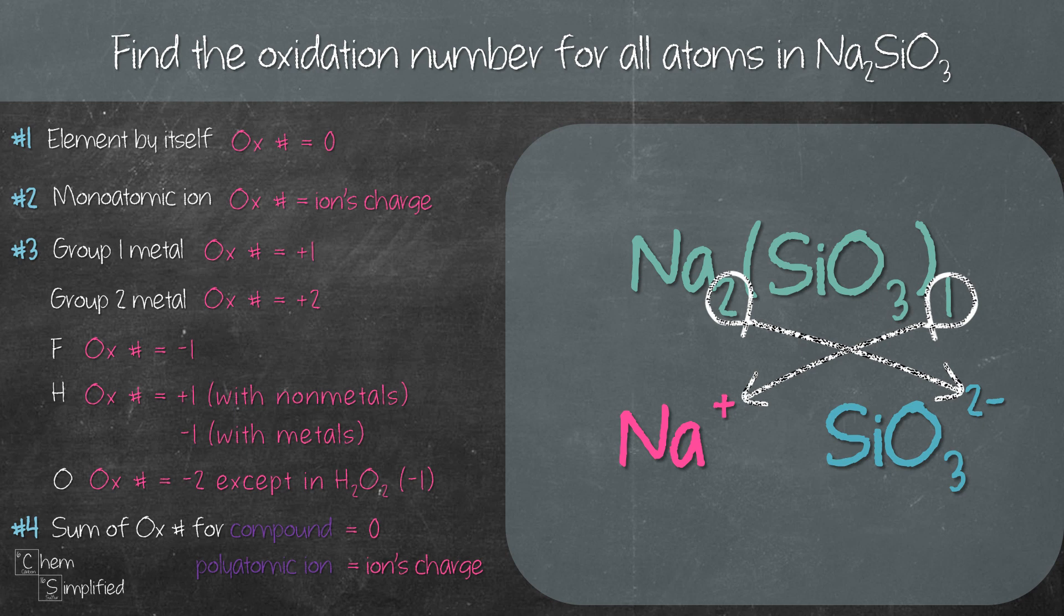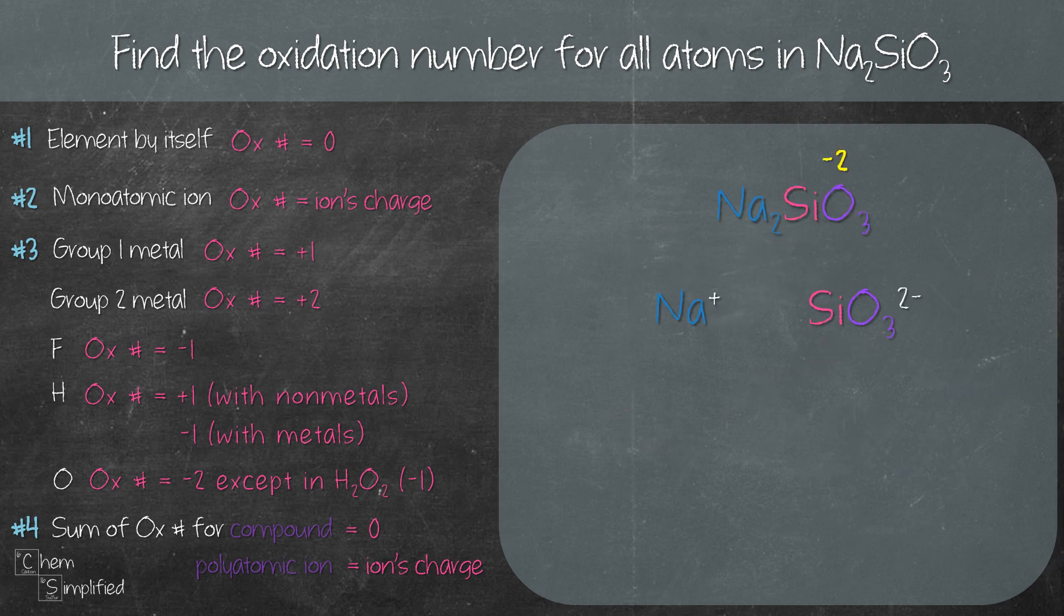Notice when you cross over the 2, we know that the charge for SiO₃ is actually 2-. I'll link a video on finding charge for ions if you're interested to dive deeper. Now let's go back to finding the oxidation number for Na and Si.